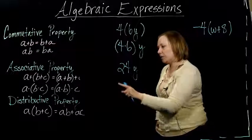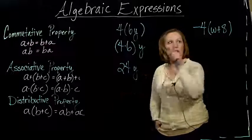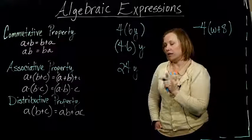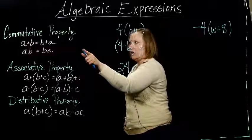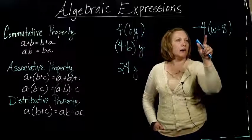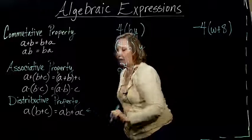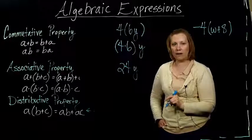Do you see which property I might want to use on this guy to make it a little bit simplified? The key is I've got something multiplied by two things added together. That looks an awful lot like this distributive property that I have here.